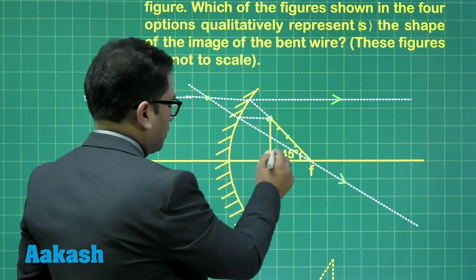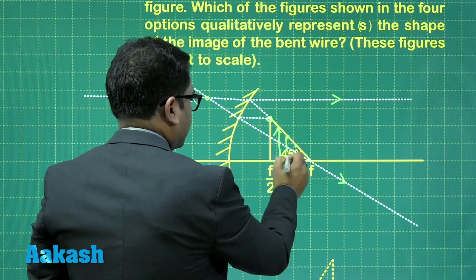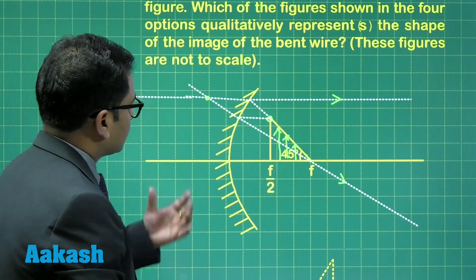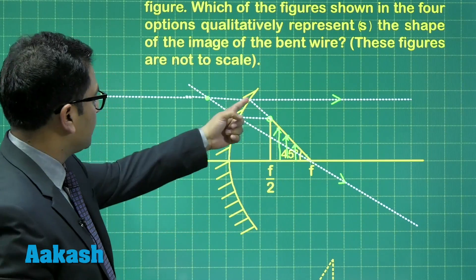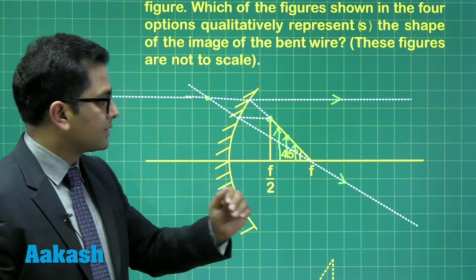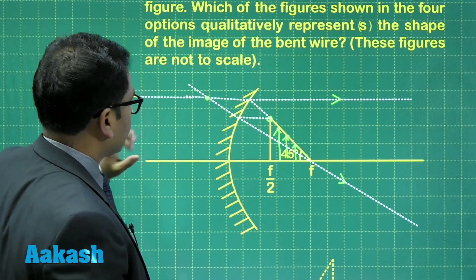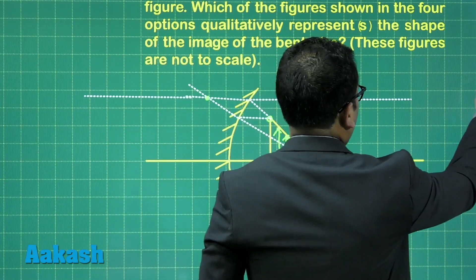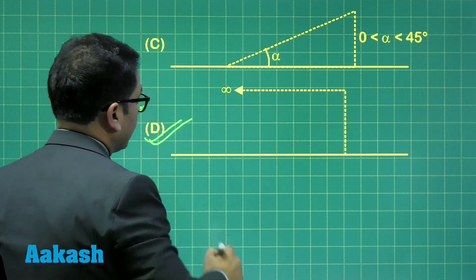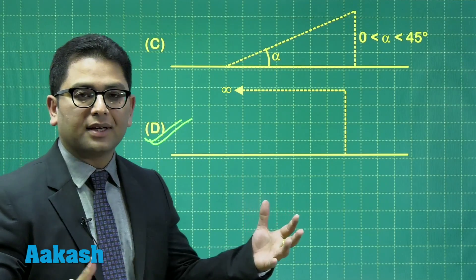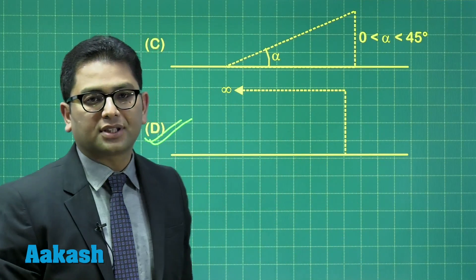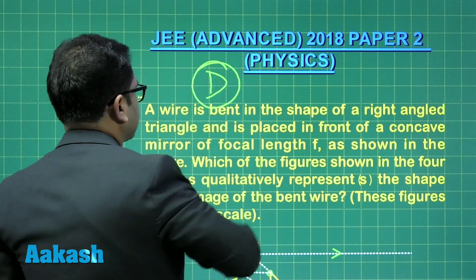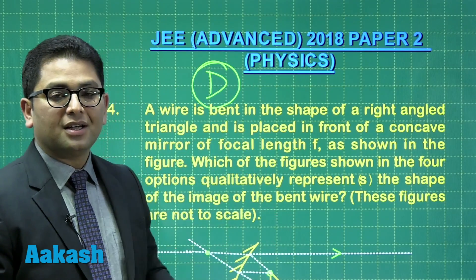In other words, the image of the head of each object — corresponding to points along the hypotenuse — will meet on a line parallel to the principal axis. This is because the hypotenuse of the triangular object passes through the focus. So the image of the hypotenuse maps to a line parallel to the principal axis. Therefore, for question number four, the correct option is option D. It is a single-option question.